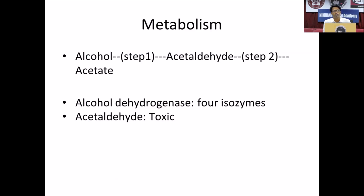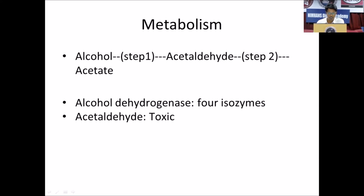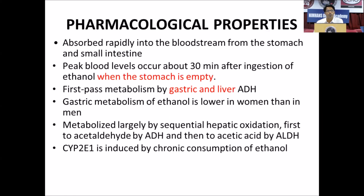Metabolism: alcohol is converted into acetaldehyde, and acetaldehyde is converted into acetate. In step one, alcohol dehydrogenase is the enzyme responsible. In step two, aldehyde dehydrogenase is responsible for conversion from acetaldehyde into acetate. There are isoenzymes — aldehyde dehydrogenase 1a and 1b — with genetic variations that determine fast and slow metabolizers. Acetaldehyde is a toxic metabolite; if it accumulates, it causes toxic effects like flushing, sweating, and irritability.